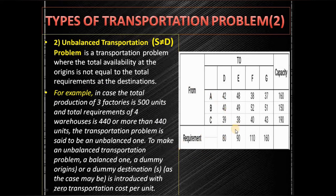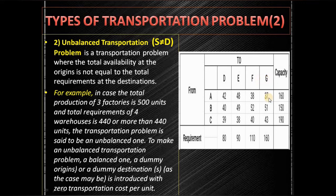To make an unbalanced problem balanced, we need to introduce a dummy variable — either a dummy origin or dummy destination. In this case, since capacity is higher than requirement, we introduce a dummy destination with zero cost and allocate only the shortage amount. Here the shortage is 60, so we introduce a dummy destination with requirement 60. This is how an unbalanced transportation problem is handled.